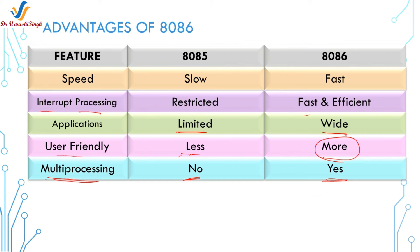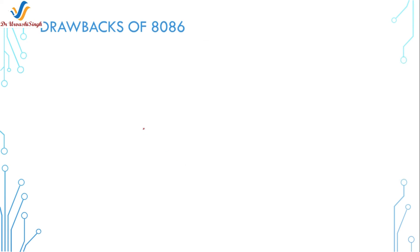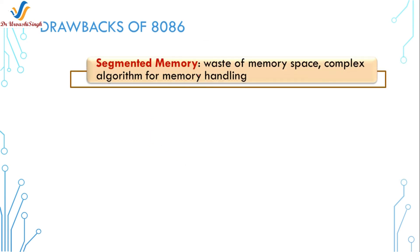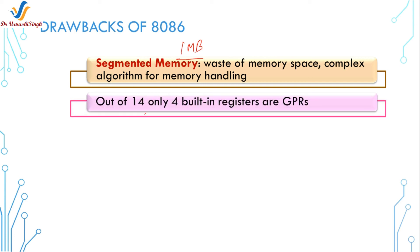After the advantages, let's see the drawbacks of the 8086 microprocessor. The first is segmented memory: memory segmentation is used to handle the large 1 MB memory, but it also causes wastage of memory space and requires a complex algorithm for memory handling. The next drawback is that out of the 14 registers, only 4 are general purpose registers. CPU register space is very important, and among the 14 sixteen-bit registers, only 4 are general purpose while the rest are special function registers.